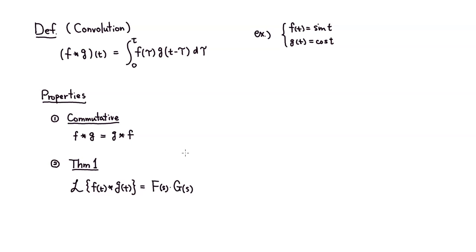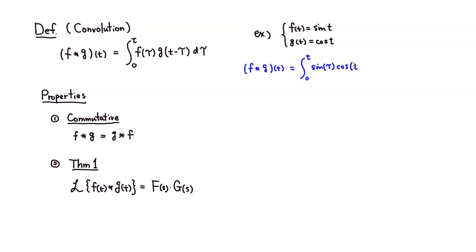Let's look at a simple example of actually computing a convolution. Let's say we take f to be sine of t and g to be cosine of t, and find f star g. So we want to find f star g of t — or f of t star g of t, same thing — which is the integral from 0 to t of sine of tau multiplied by cosine of t minus tau with respect to tau.